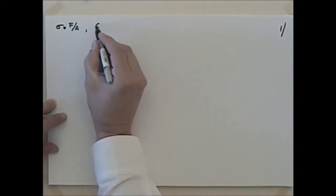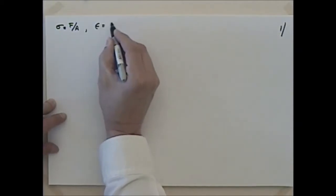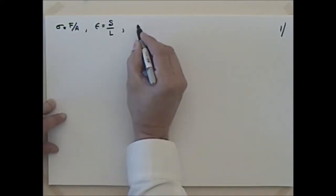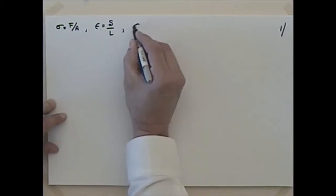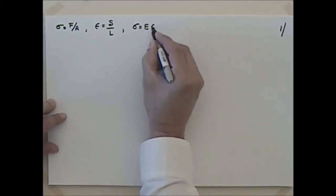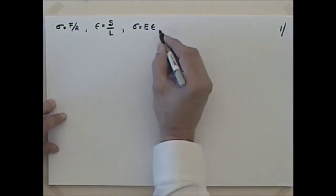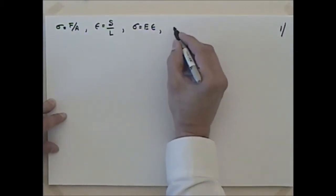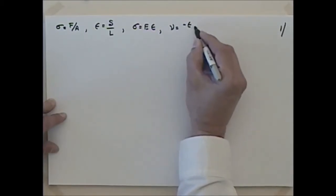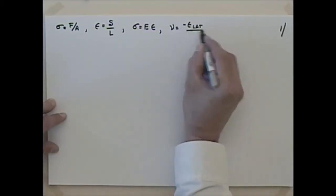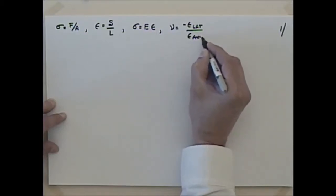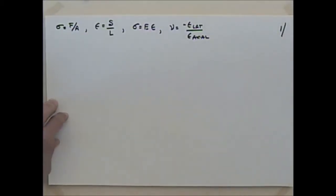Our strain, epsilon, is equal to delta over L. We related those two with Hooke's law, that sigma is equal to Young's modulus times the strain, epsilon. We had Poisson's ratio, that minus epsilon lateral over epsilon axial.